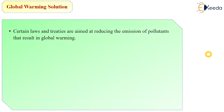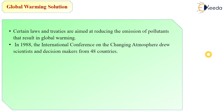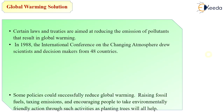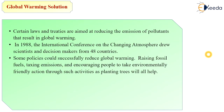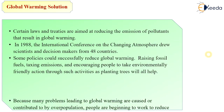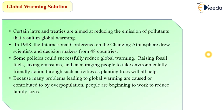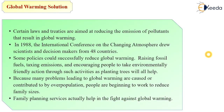Certain laws and treaties are aimed at reducing emissions of pollutants that result in global warming. In 1988, an international conference on the changing atmosphere drew scientists and decision makers from 48 countries. Policies that could reduce global warming include raising fossil fuel taxes, taxing emissions, and encouraging environment-friendly actions such as planting trees. Because overpopulation contributes to global warming, people are working to reduce family size, and family planning services help in the fight against global warming.